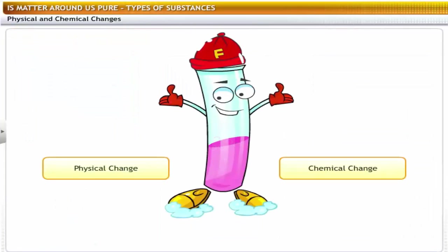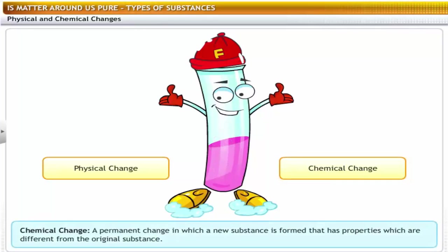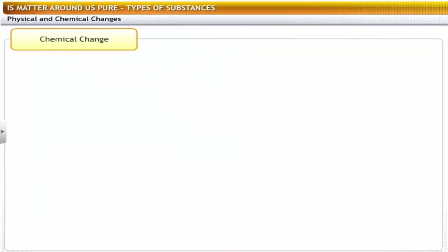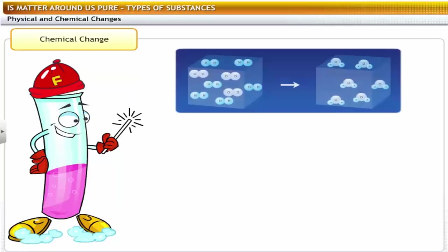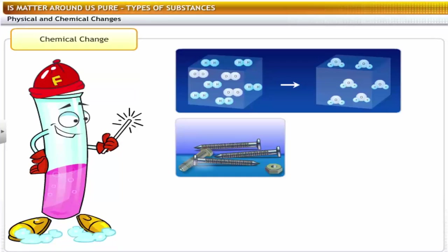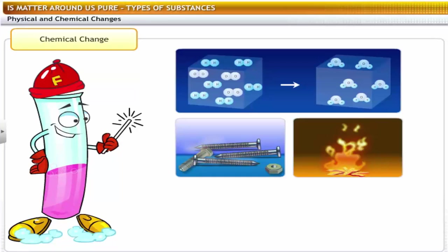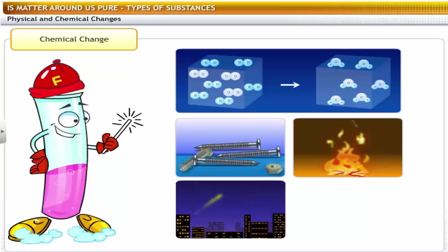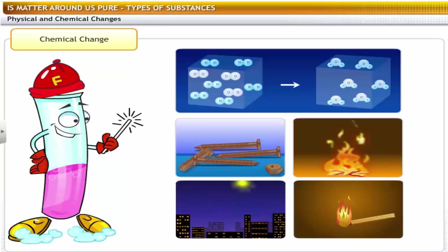Likewise, we can define a chemical change as a permanent change in which a new substance is formed that has properties which are different from the original substance. For example: formation of water from hydrogen and oxygen atoms, rusting of iron, burning of wood, lighting of firecrackers, and burning of a matchstick.